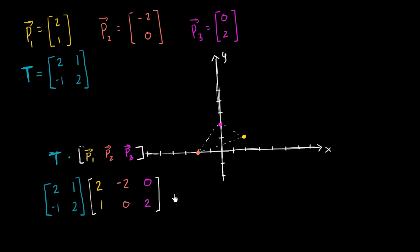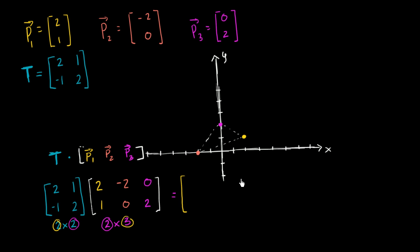Now what is this going to give us? This is a two by two matrix, and we're multiplying it by a two by three matrix. Matrix multiplication is defined here because the number of columns in the first equals the number of rows in the second, and it's going to result in a two by three matrix — two rows and three columns — which we can imagine represents three new position vectors.